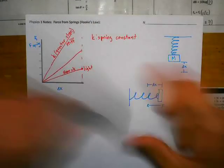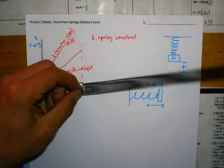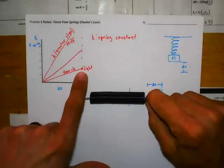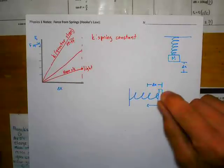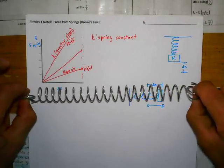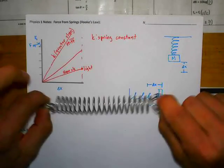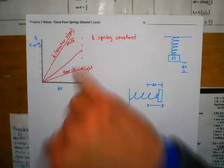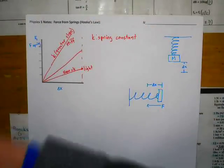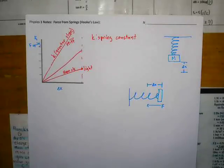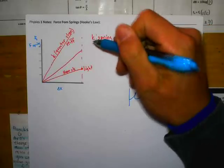For example, a loose, easy-to-stretch spring has a low spring constant — it's down on the graph. A tougher spring that takes more force to stretch the same distance has a higher spring constant and a higher slope. Spring constant K is very similar to mu (the friction coefficient) — just as mu describes the surfaces in contact, K describes that specific spring.